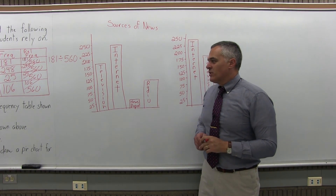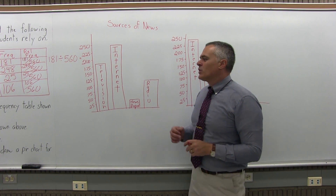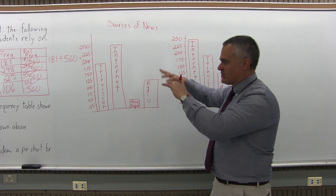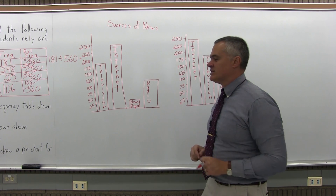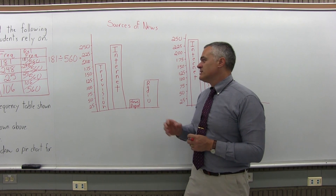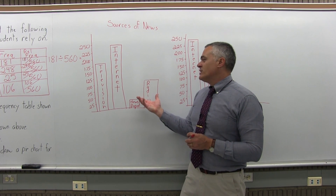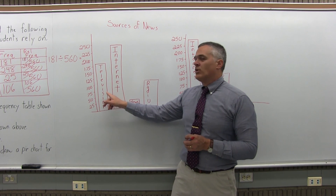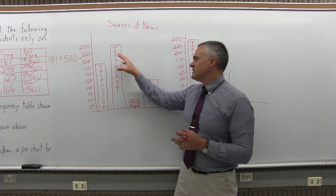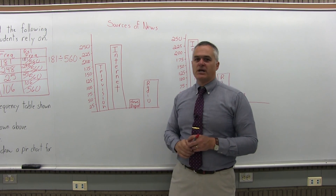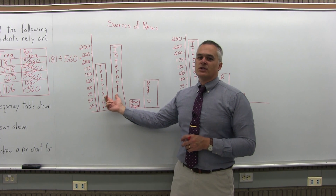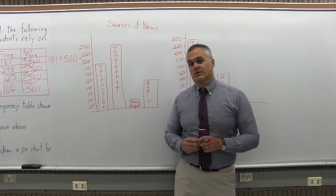Finally, the last part of the question asks: what problem might you have if you attempted to draw a pie chart for this information? Not everything is well-suited to a pie chart, and this is one of those problems. The reason is that a lot of people can get their news from more than one source, and it's not clear which wedge of the pie chart to put them in. For a bar graph it's okay — it just makes each bar bigger. But for the pie chart that can be a problem, since many people use both internet and television.